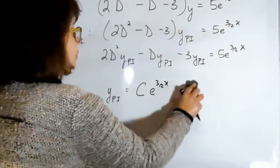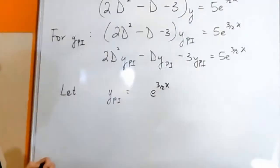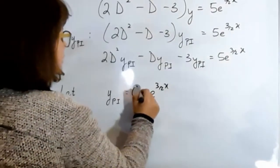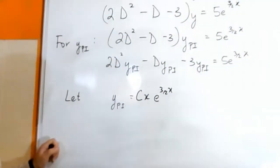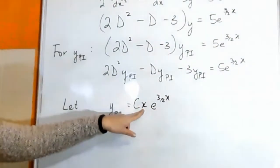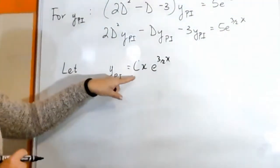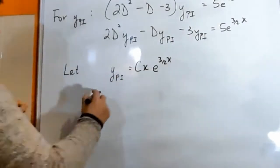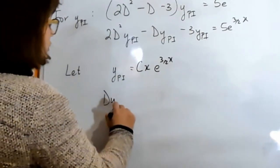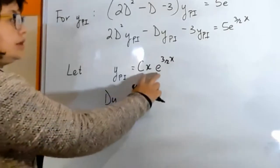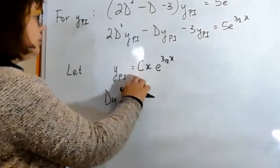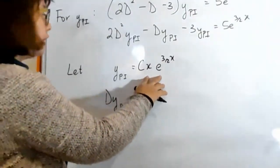And the way we do that is we introduce an x, an independent variable into the trial function. So now what you've got, when you find the derivatives, is you've got a product. So you have to use your product rule for differentiation.